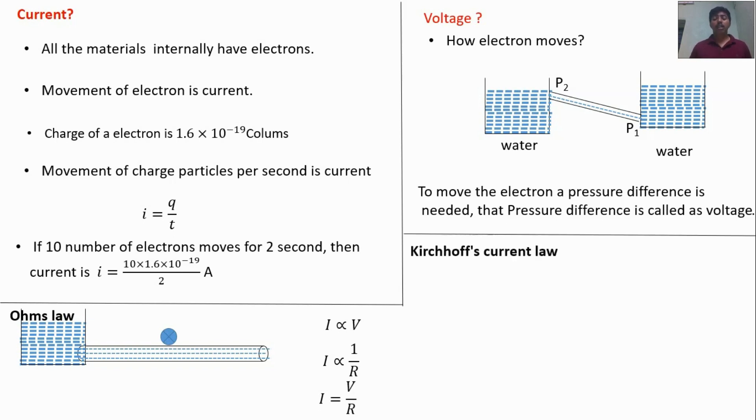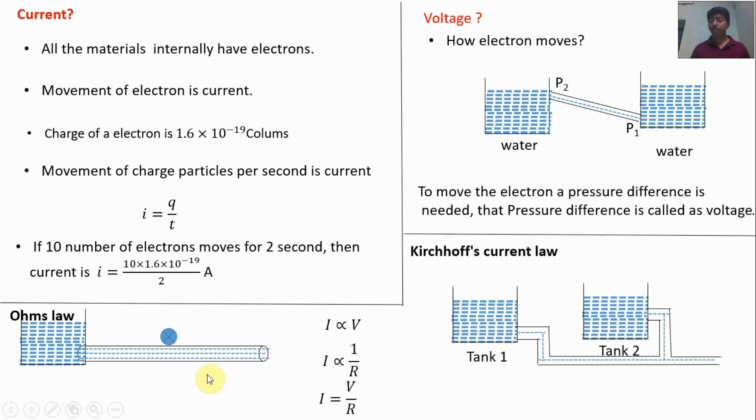Kirchhoff's current law. Let us take another example. This is tank 1, tank 2. Let us take the current flow in tank 1 is 2 liter per second. In tank 2 is 1 liter per second. What will be the outgoing water?